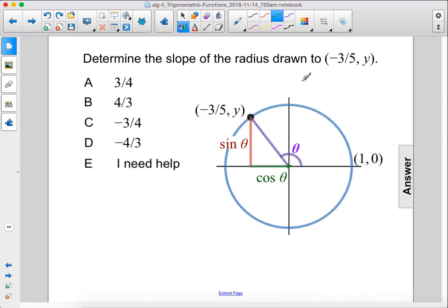Determine the slope of the radius drawn to negative 3 over 5 comma y. In the previous problem we determined that sine theta, or the y value here, is 4 over 5.